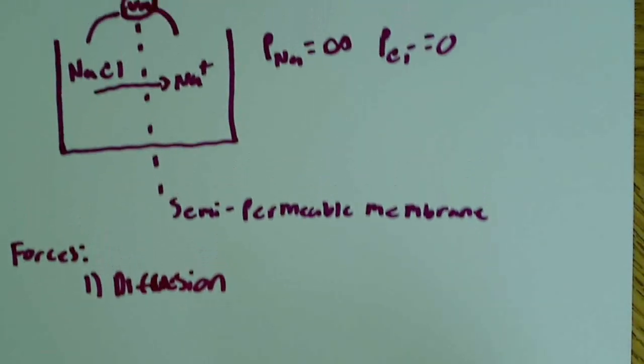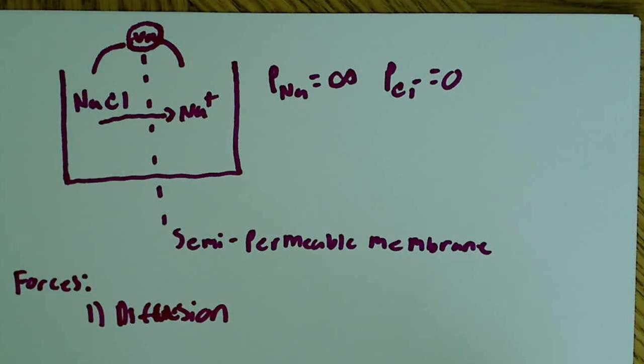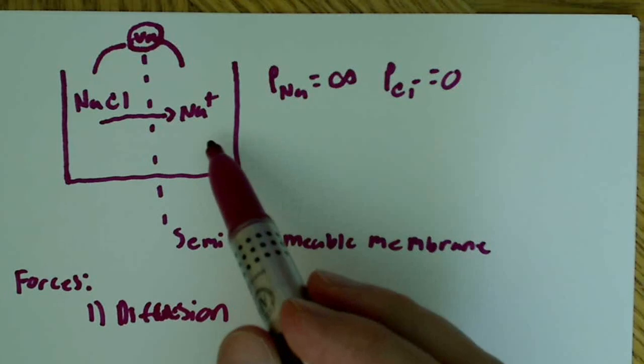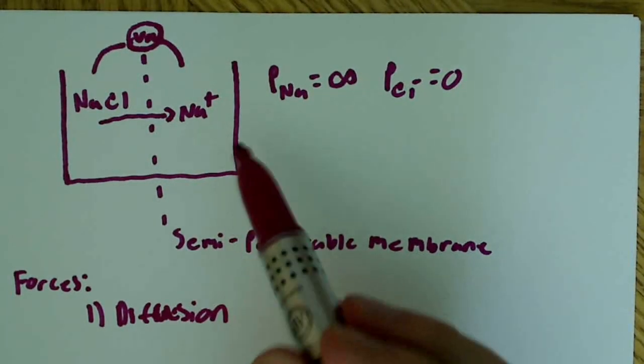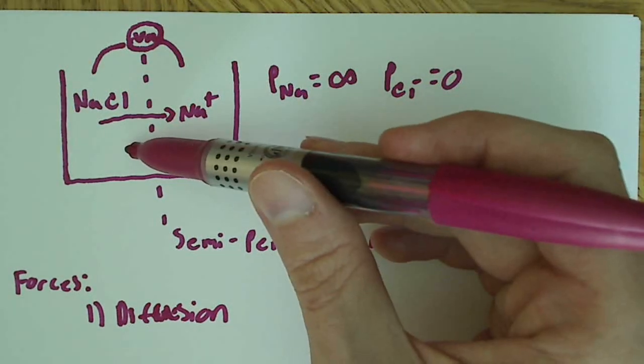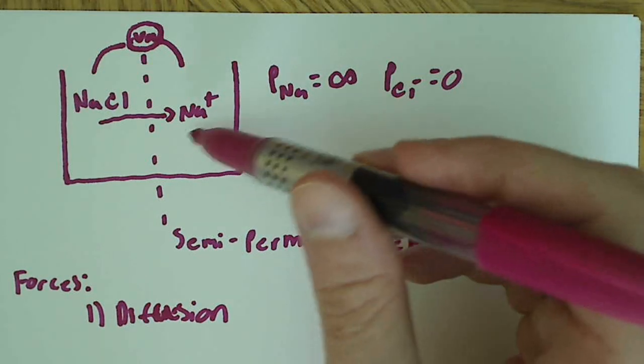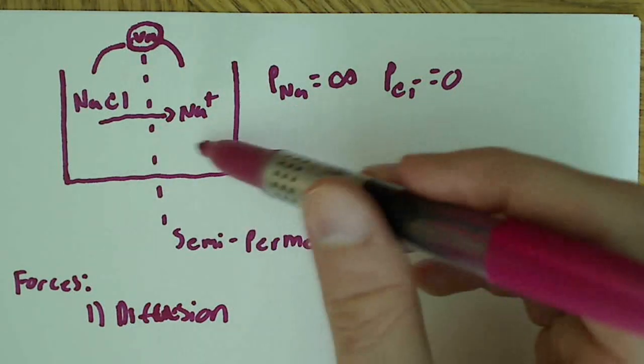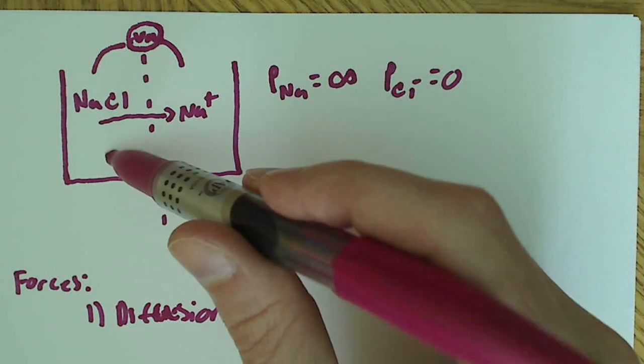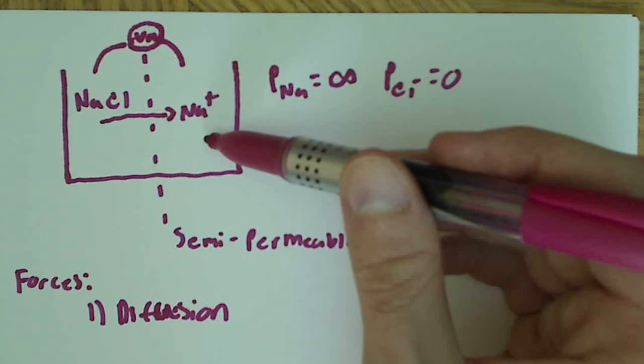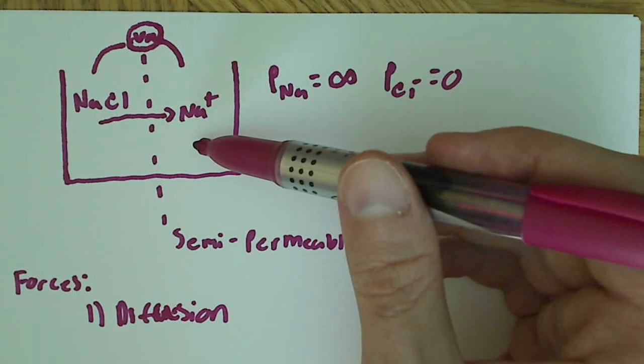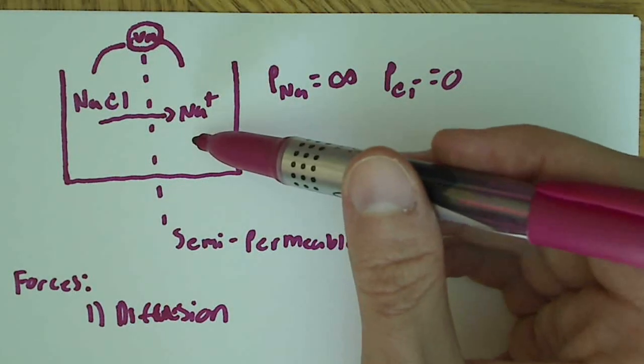So we have the diffusion force going on here, tending to move things from higher concentration. But we also have, over time, as this occurs, as more positive charge builds up on this side and this becomes more negative, an electrical force develops here. That electrical force is going to tend to pull Na+ ions back across the membrane, back onto this side. Because remember, this is going to be more negative, and this over here is going to be more positive. And opposite charges attract. This is just simple physics, simple chemistry, opposite charges attract.